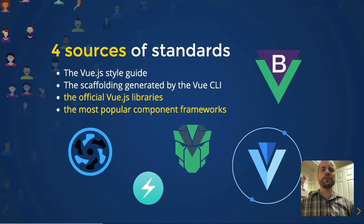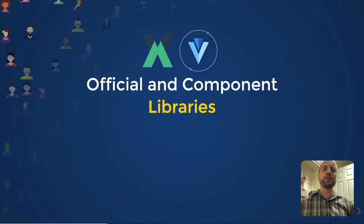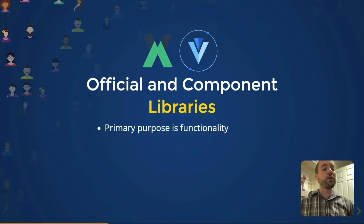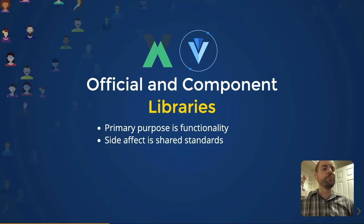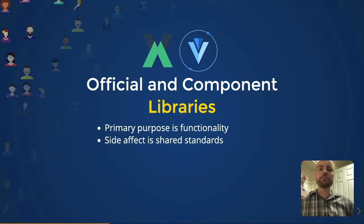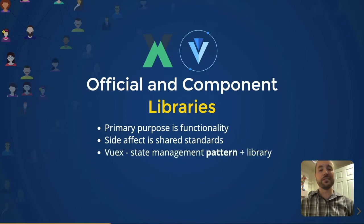Let's dive deeper into the official and component libraries. Their primary purpose is functionality, but as a side effect of being so widely used, they also provide shared standards. Take Vue Router, for instance. If you use Vue Router, you're not just opting into a package — you're opting into a community of people who use the exact same package. Vuex embraces this by calling itself a state management pattern plus library, understanding the importance of having a standard to follow.